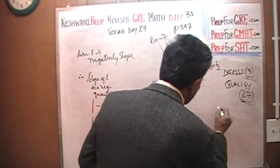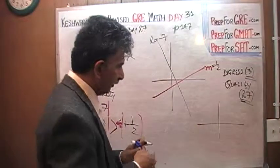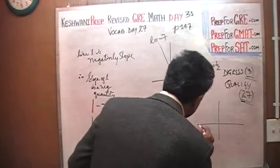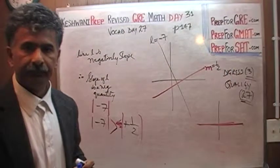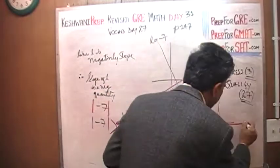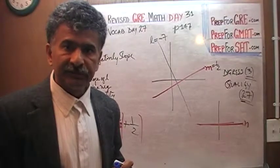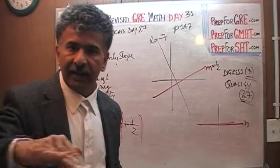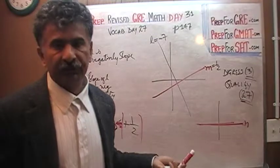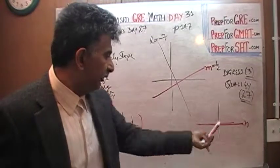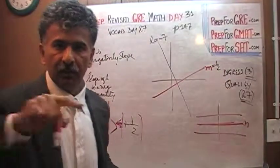Let's look at one more scenario. Which line has a greater slope? Here's my first line — let's call it line N. Line N is a flat line. Because slope measures the steepness of the line and it's not steep at all — it's just flat — it has no steepness, so the slope is zero. Any line that is parallel to the x-axis has a slope of zero.